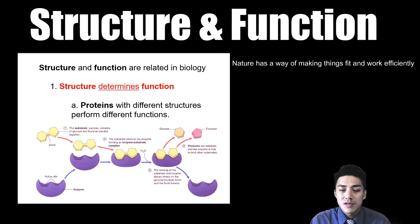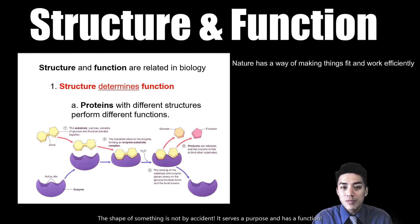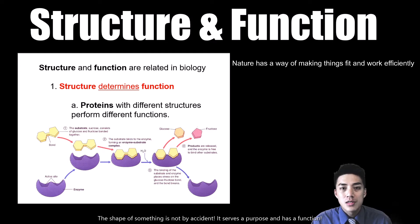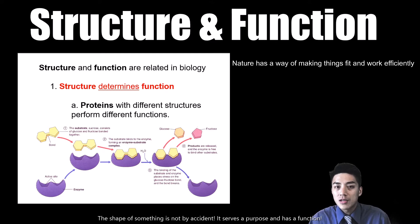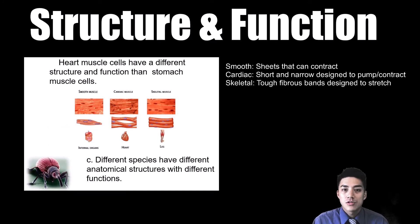Certain proteins have certain shapes and they can take on molecules and break them down. For example, in the picture next to me, you have an enzyme which can break down sucrose. Sucrose is a complex sugar, and when your body is working to digest something, it needs really simple sugars. So what happens is this enzyme breaks down sucrose to form glucose and fructose, which the body can then readily digest. The structure of something was not made by accident — they serve a purpose and have a function.